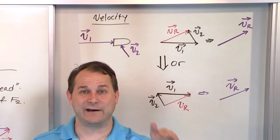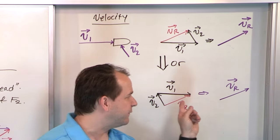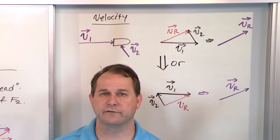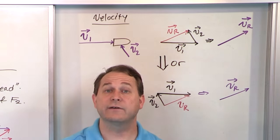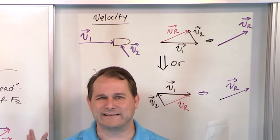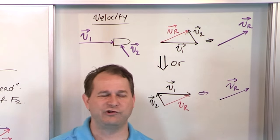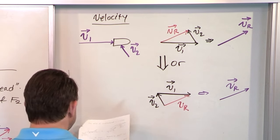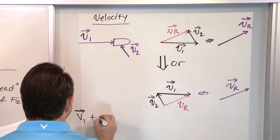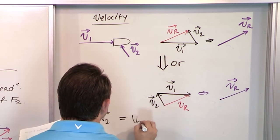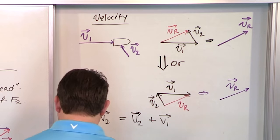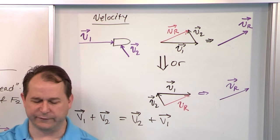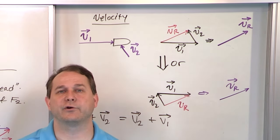All you have to do is put the vectors on paper tail to head, tail to head, tail to head — like a little chain or train — and then find that open tail and connect it to the final head. You'll always get the correct resultant vector no matter how you've arranged everything. So V1 plus V2 is exactly the same as V2 plus V1. This is called commutative — the same as 1 plus 2 equals 2 plus 1, and that result holds for vectors also.